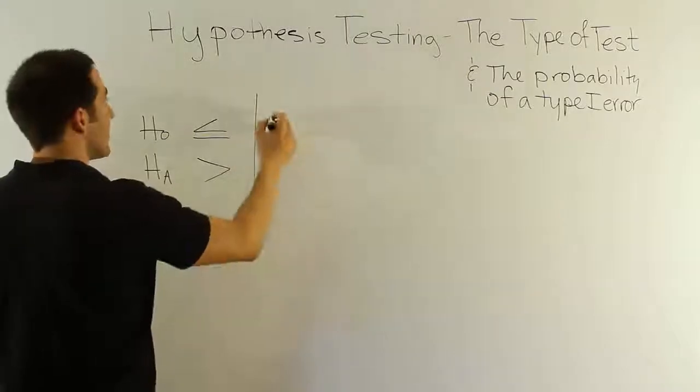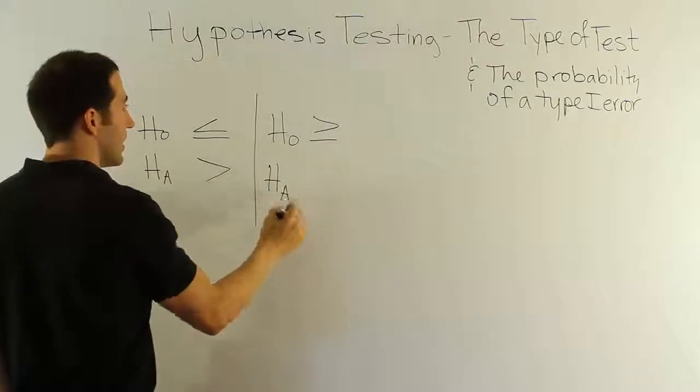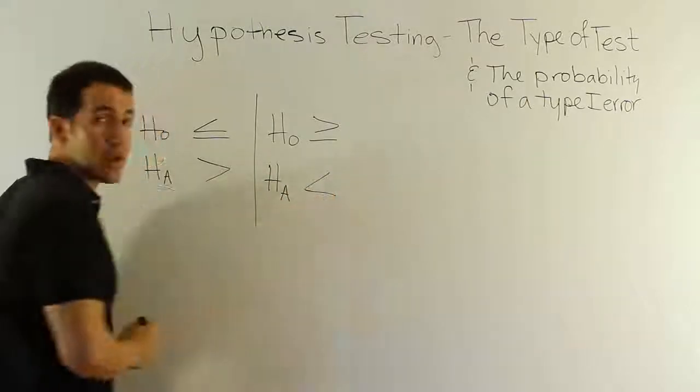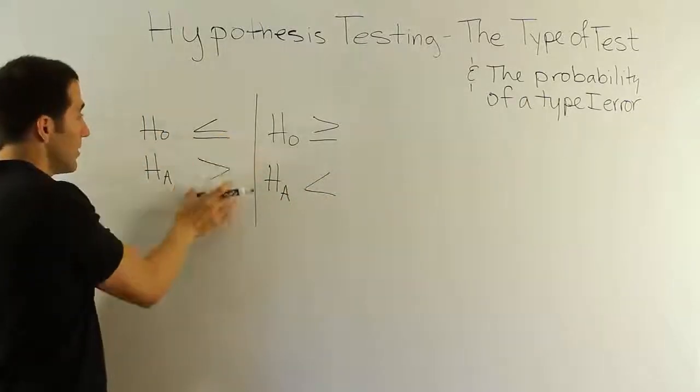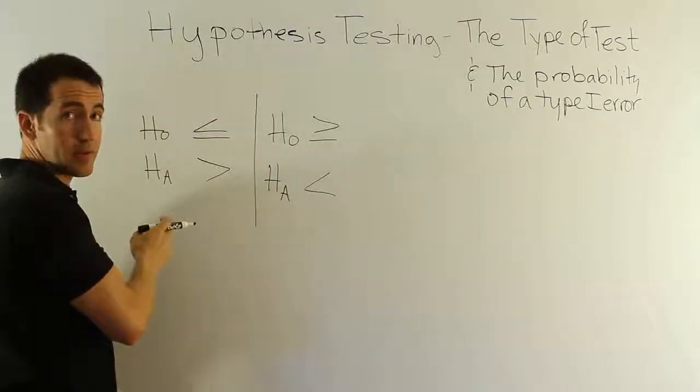You can also have a scenario where H0 is greater than or equal to, and that would lead to the scenario that HA must be less than. Because these always have to express opposing points of view. If you're not less than or equal to something, you must be greater than.